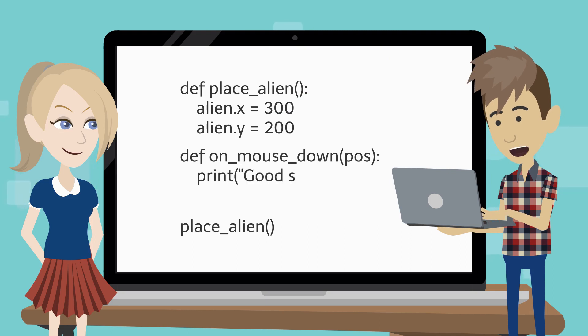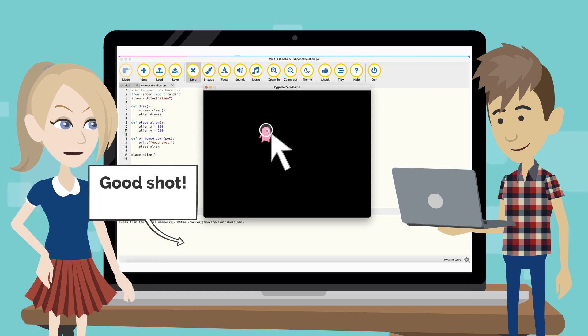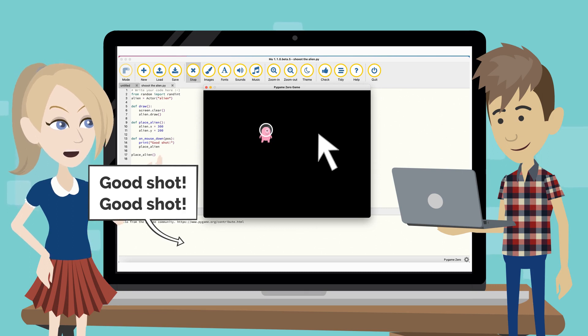Type this code in between the code we added. POS is the position of the cursor when the player clicks the mouse. At this point, the good shot message is displayed every time, everywhere the player clicks the mouse. But we only wanted to show if the player actually hits the alien.